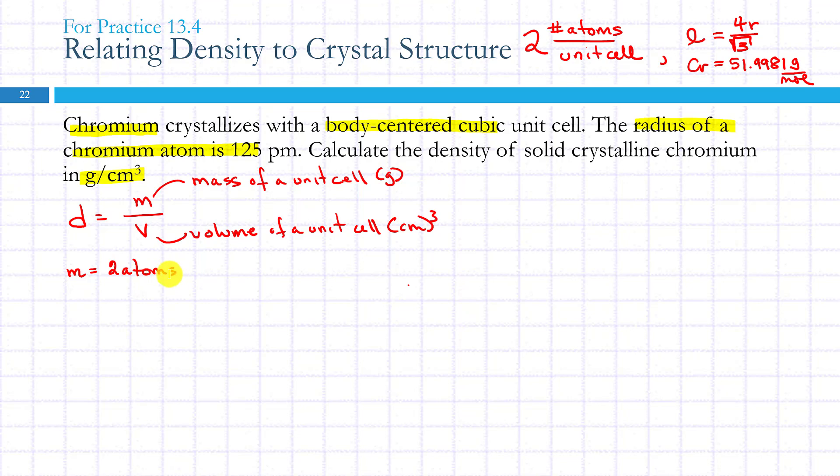We're going to convert that into moles. This is a normal process for finding mass from atoms. We're going to take atoms, get to moles, get to grams. I have two atoms of chromium in my unit cell, and then I know that there's 6.022 times 10 to the 23rd atoms in one mole of chromium.